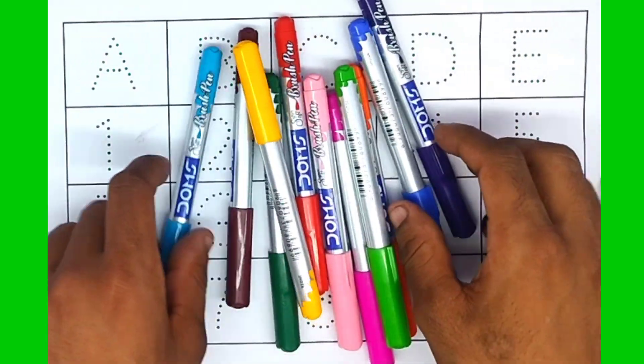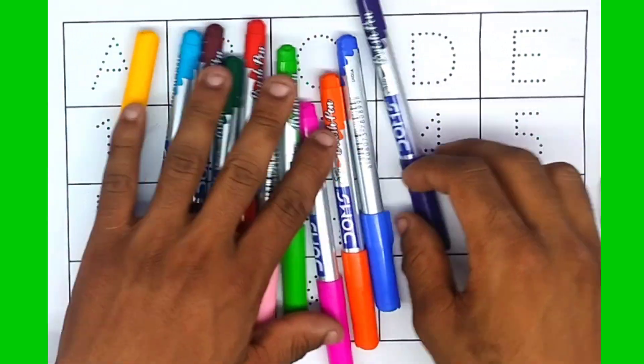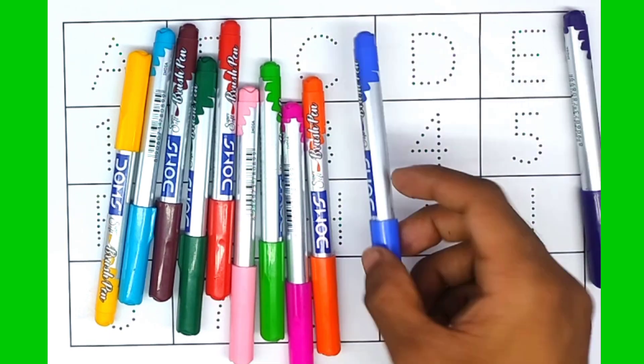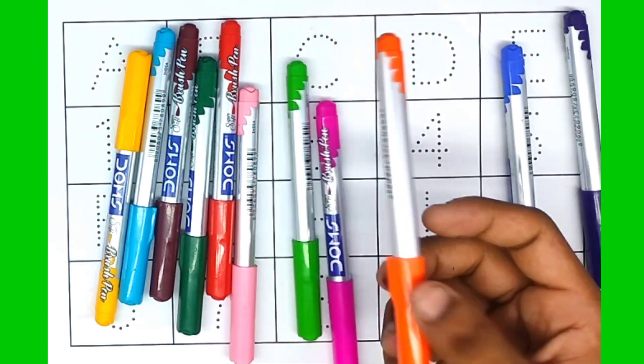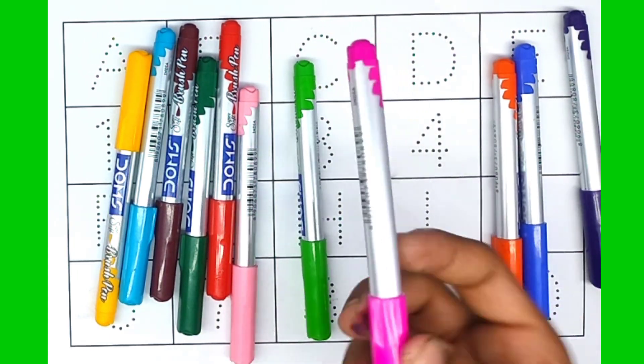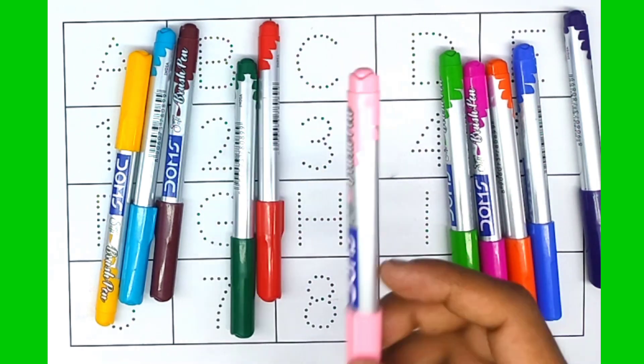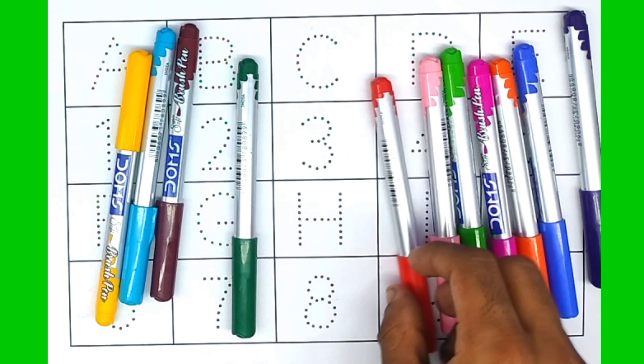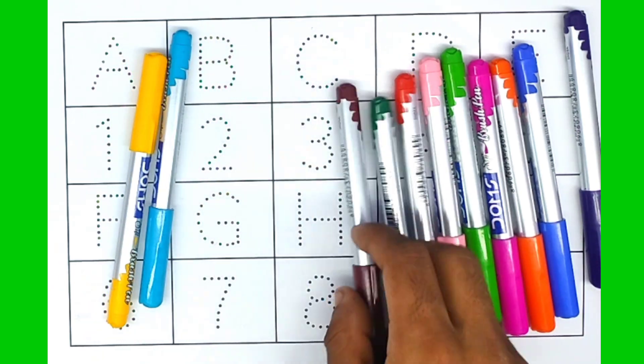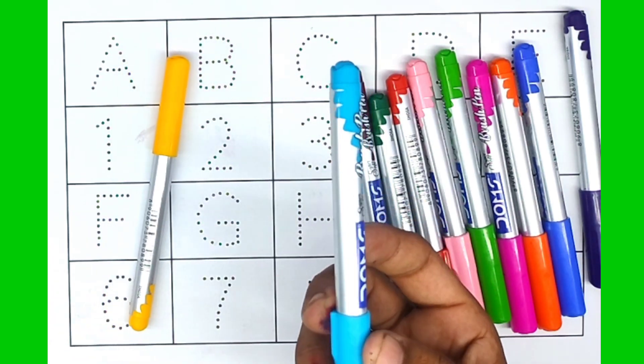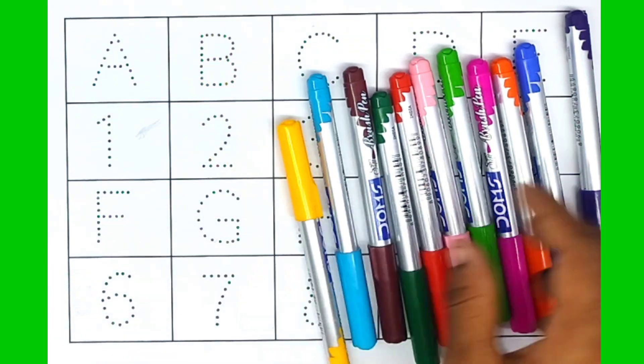Hello guys, let's color name. Purple color, blue color, orange color, pink color, purple color, light pink color, red color, green color, brown color, sky blue color, yellow color.